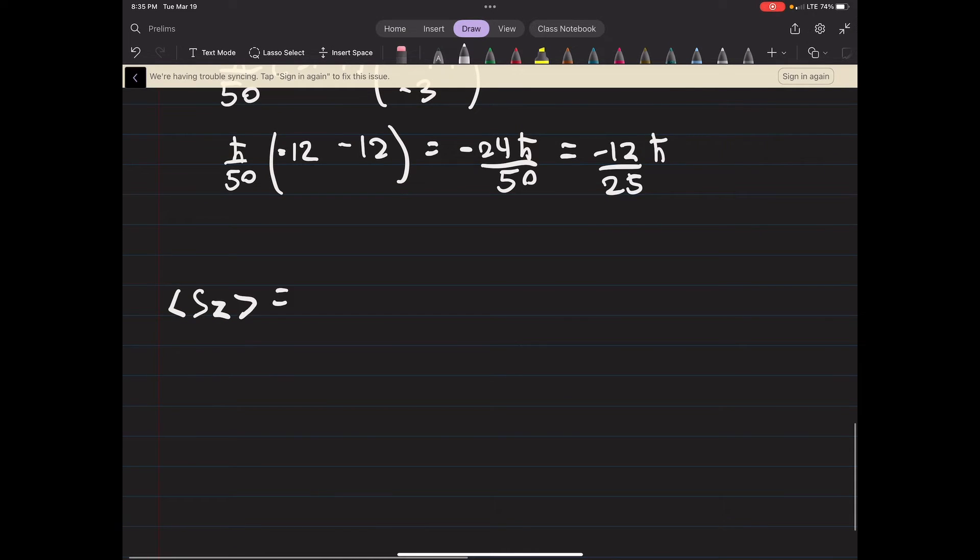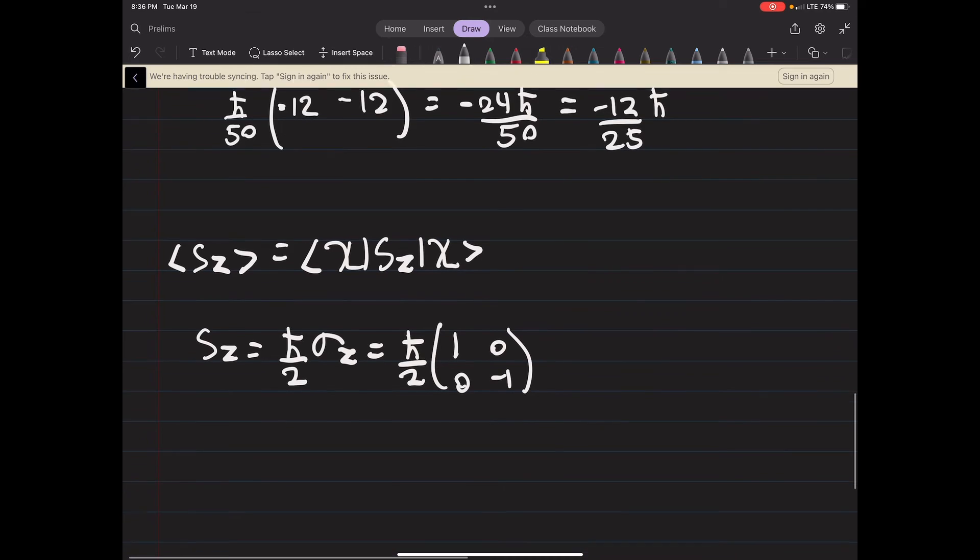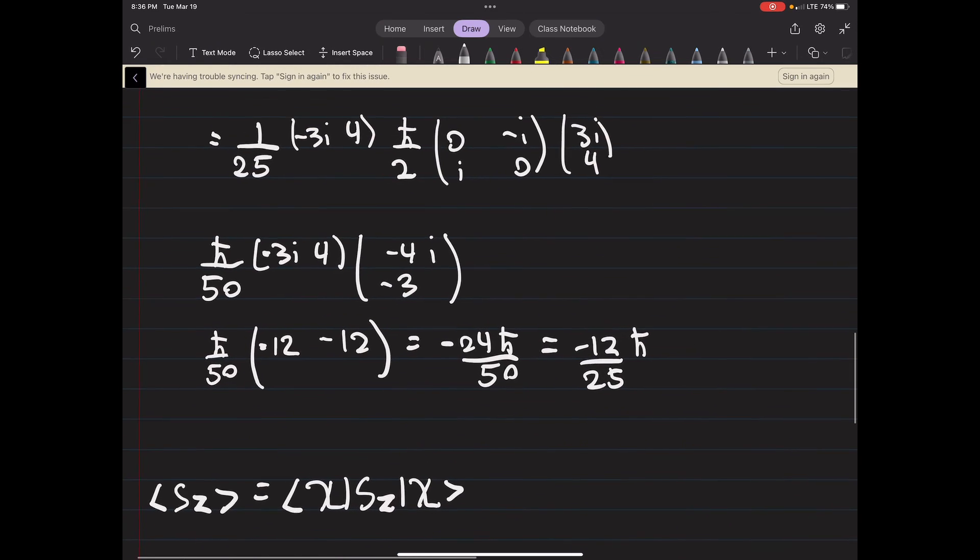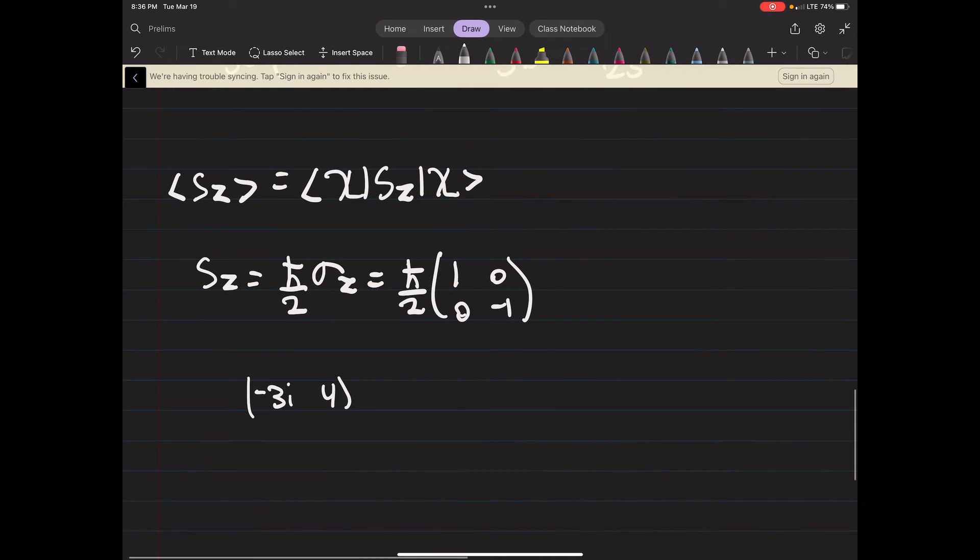Sz - again we're going to follow this same process, where Sz is h bar over 2 times the appropriate matrix, which will be (1,0; 0,-1). Okay, so we have (-3i, 4), our constant which was 1 over 25, and there's the h bar over 2 so that'll be h bar over 50, times (1,0; 0,-1) and then (3i, 4). Okay.